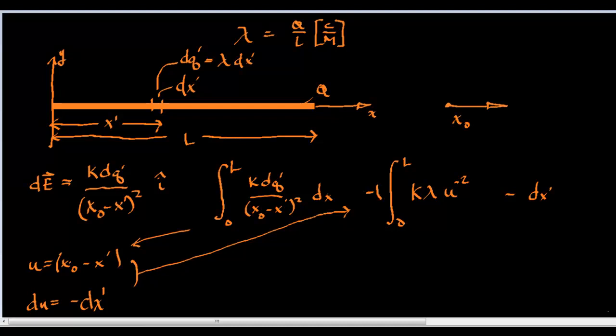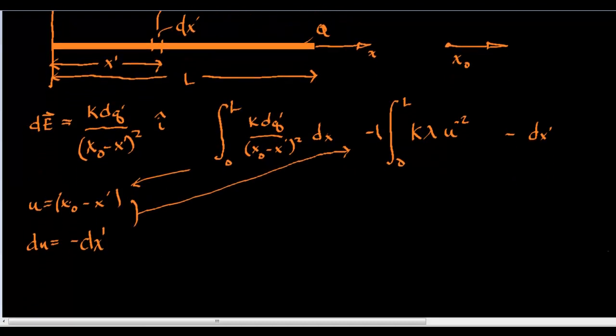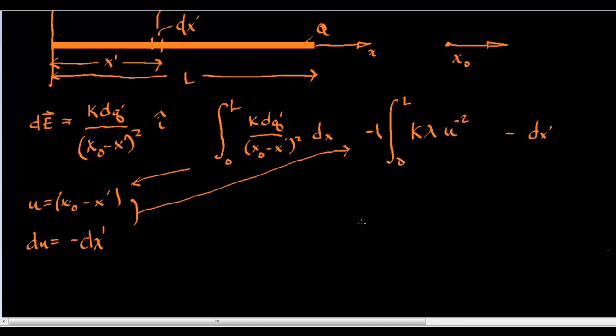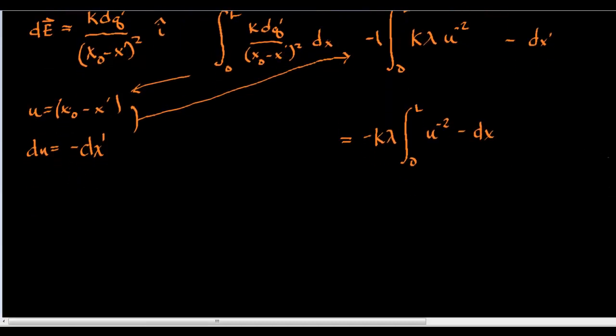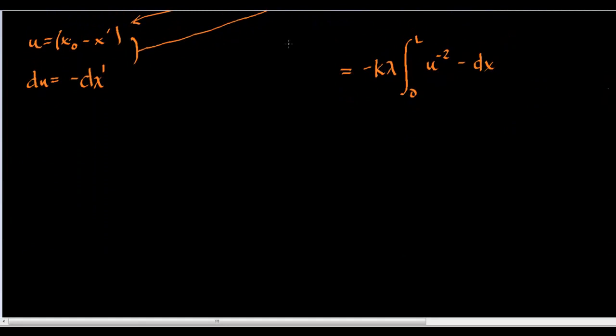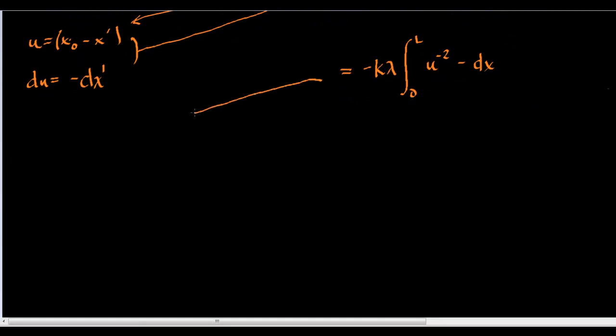So, we can clean this up even further by moving the constants out. k and lambda are just constants. So, we're going to make this negative k lambda times the derivative from 0 to l of u to the negative 2 minus dx.